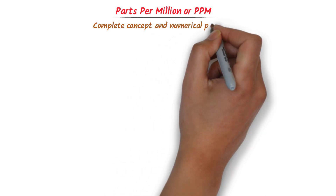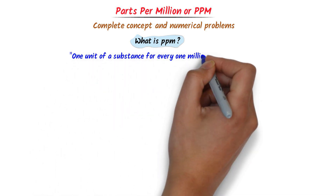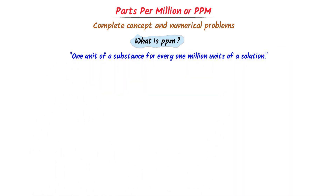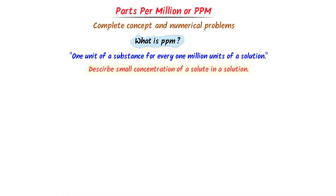Parts per million are ppm. I will teach you the super easy concept and important numerical problems of ppm. First of all, let me teach you what is ppm. Well, ppm means one unit of a substance for every one million units of the solution. PPM is a unit of measurement which is used to describe very small concentration of a solute within a larger solution.